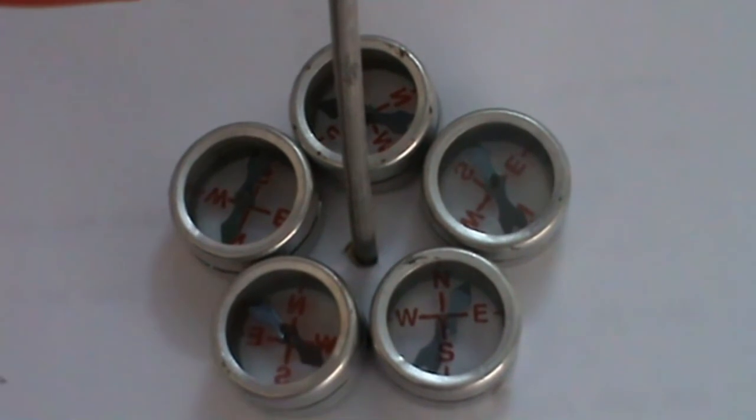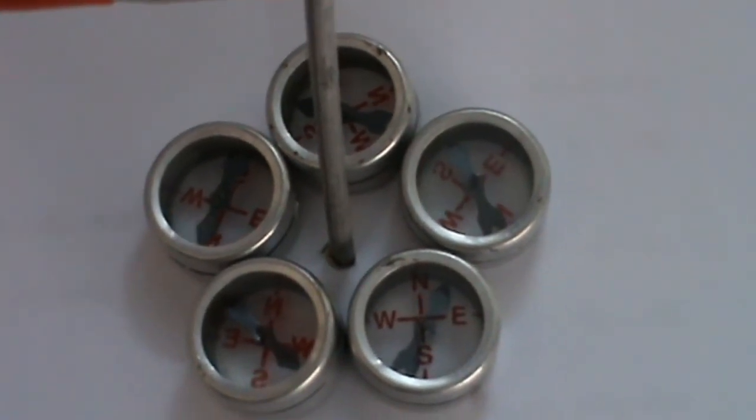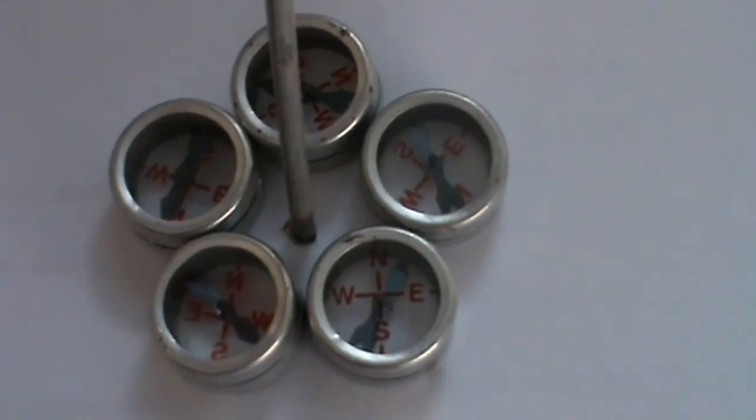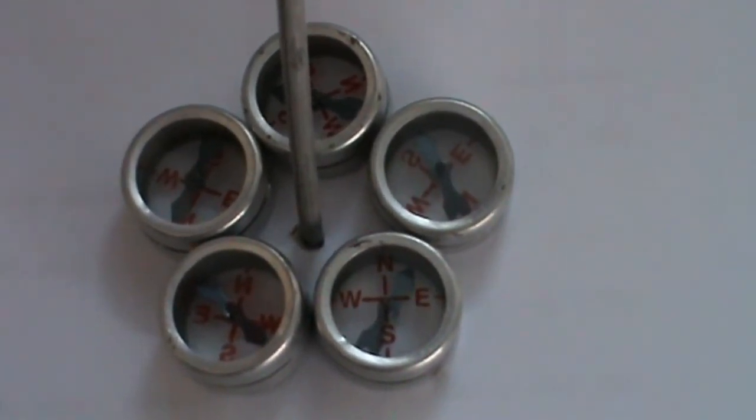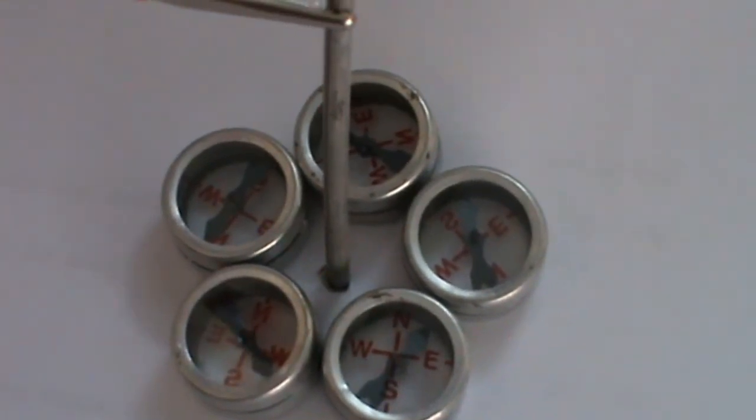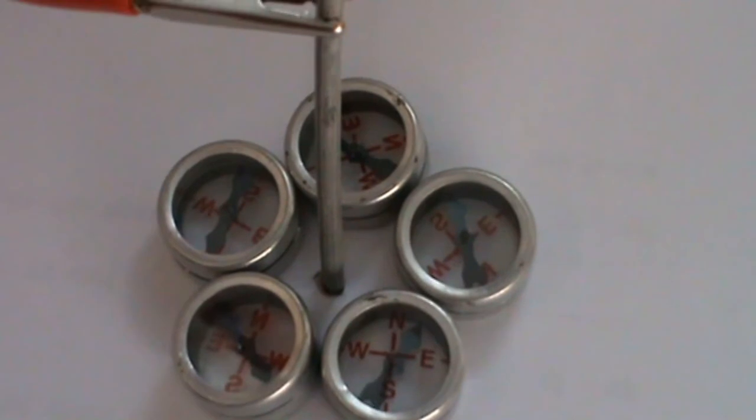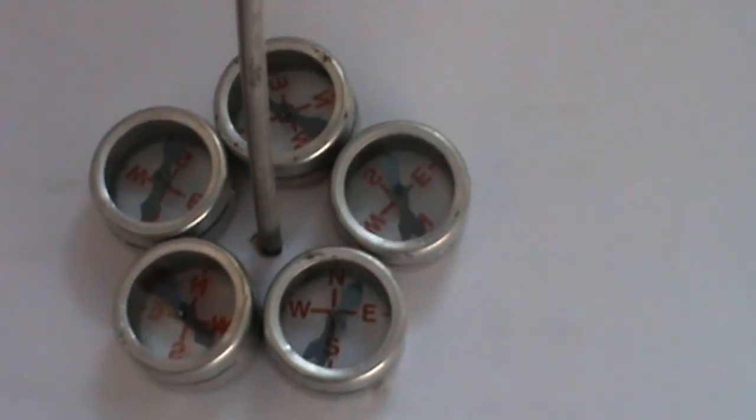If you look at the pattern now, it is just opposite to the pattern that we have seen earlier. When we change the direction of the current, the magnetic field direction will also be changed. That's what we have witnessed in this case.